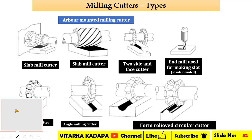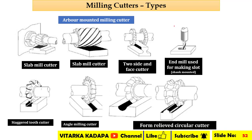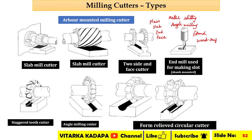After learning the various types of operations used in the milling machine, let us next go for types of milling cutters. The basic types are: plane slab end, end milling cutter, face milling cutter, metal slitting cutter, angle milling cutter, formed milling cutter, woodruff key milling cutter, and T-slot milling cutter.